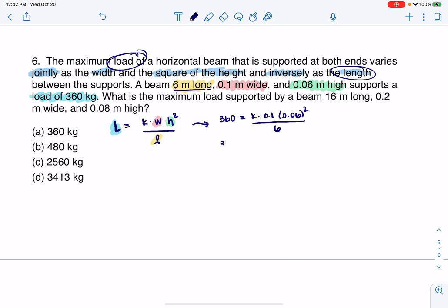I crunched these numbers on my calculator already, so you get 360 equals, you've got to be careful, this would be 0.00006k. Then you're going to divide both sides by 0.00006, there's four lead zeros and then the six. That's going to tell you that k is a pretty large number, it's 6 million, which is fine.